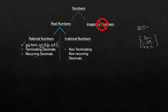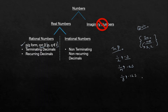Rational numbers can be a terminating decimal or a recurring decimal. A terminating decimal actually ends — like 1/2 is 0.5, 1/4 is 0.25, and 1/8 is 0.125, with nothing after the last digit. The property for a terminating decimal is that in the denominator of the fraction, if we have a power of 2 or a power of 5, or a combination of both, then it will be a terminating decimal.